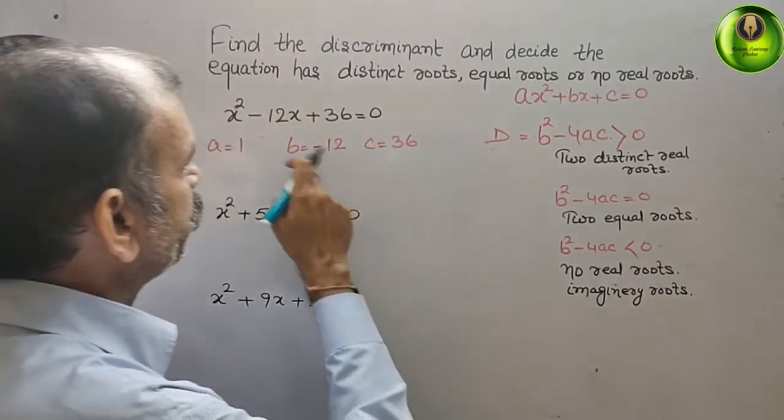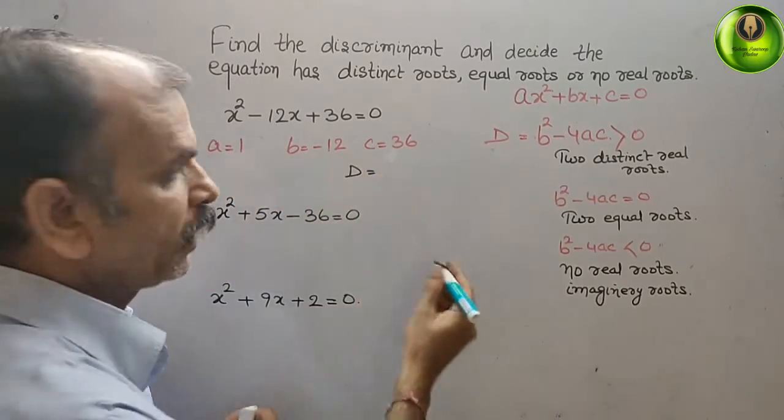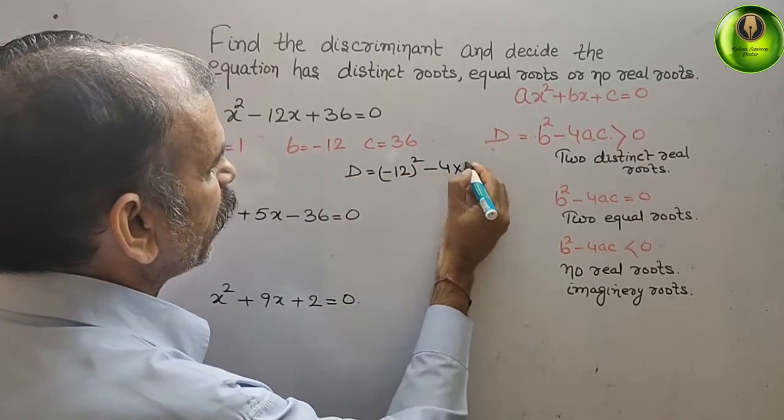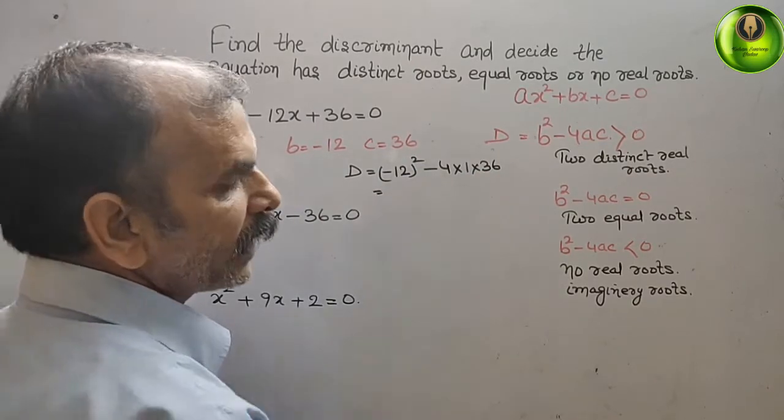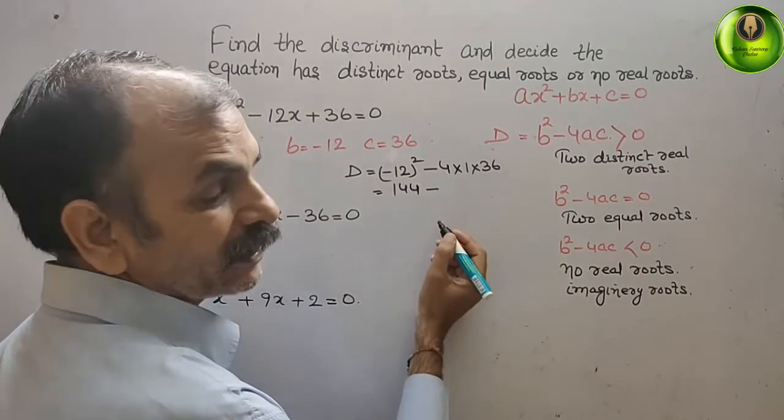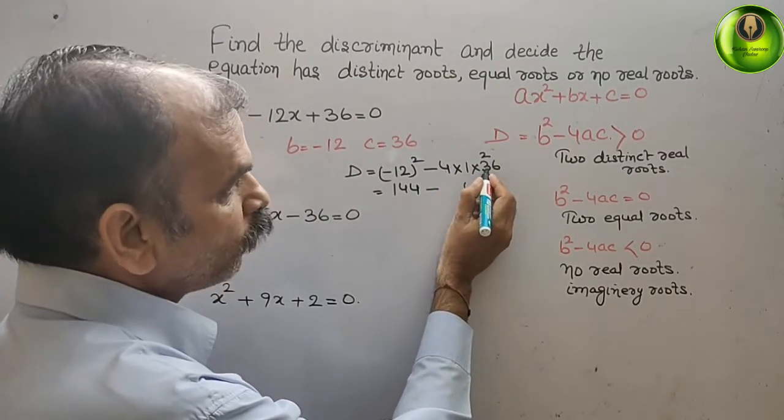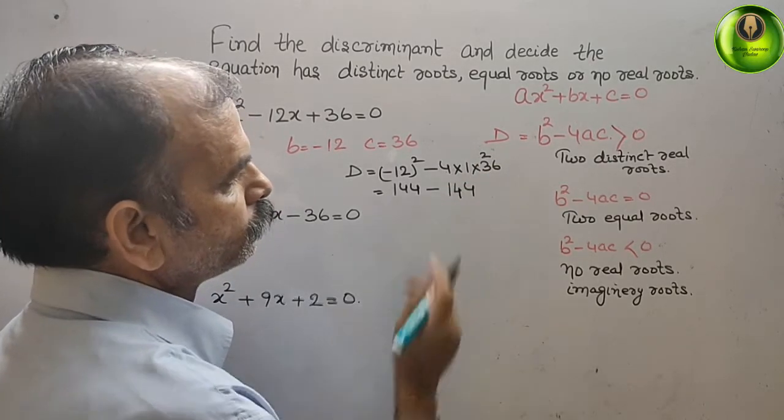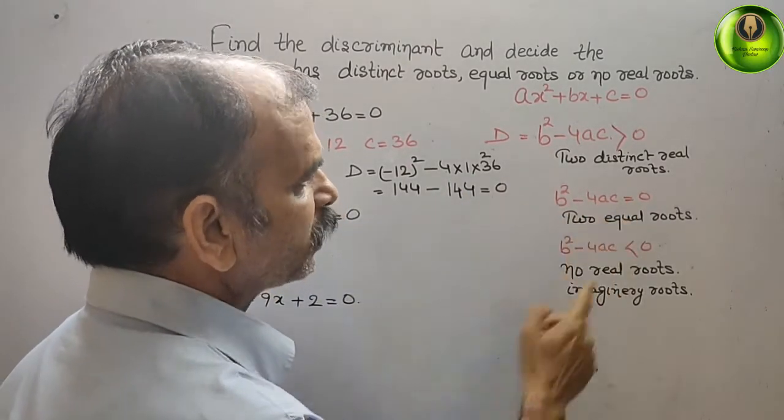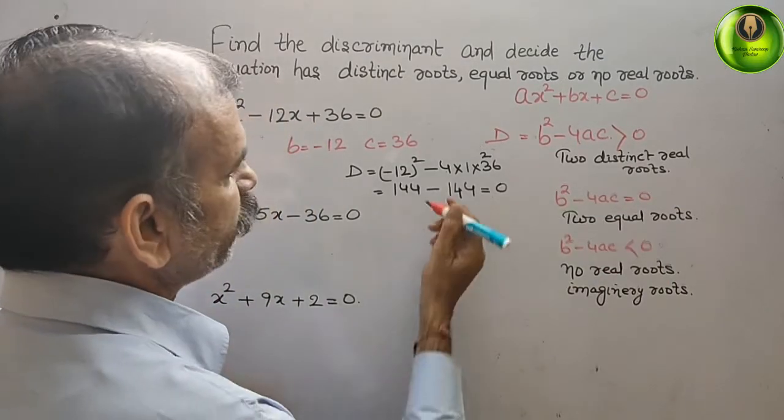Now we will go for discriminant of first one. What we will get? D is equal to b square, minus 12 square, minus 4 into a is 1 into 36. So here what we will get? Minus 12 square is 144 minus 4 into 36, that is 144. So what you will get? 0. So here you will get b square minus 4ac is equal to 0. That means here you will get 2 equal roots. That means first equation we will get equal roots.